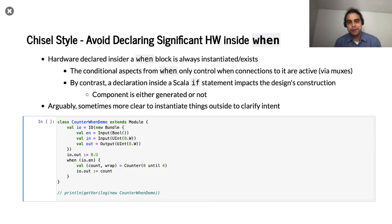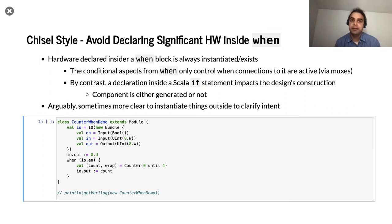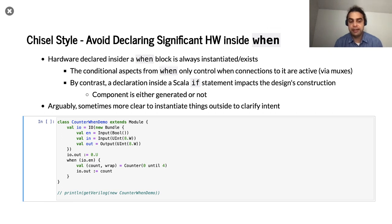This is a style tip, not a correctness one — if you don't follow this advice, your code will work just fine. I find it a little confusing when very large things are instantiated inside of a when statement. Remember: our Chisel designs are really just instantiating Chisel things and connecting them. The when statement controls when those connections are taking place — it doesn't control the existence of a module. If I instantiate something inside a when statement, that thing always exists. It's not like it's only there when the condition is true.